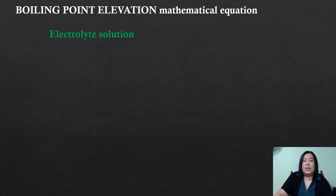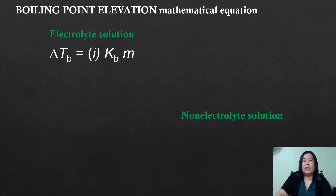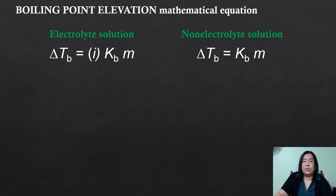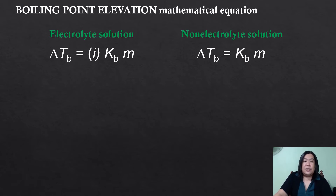For the mathematical equation of boiling point elevation, we have two types of solutions. Electrolyte solutions are solutions that conduct electricity due to the presence of ions in the solution, while non-electrolyte solutions are solutions that do not conduct electricity because there are no ions present.